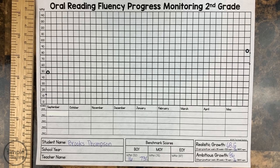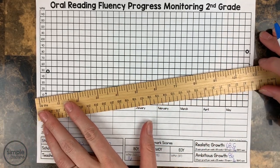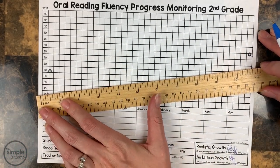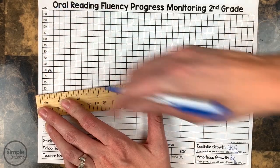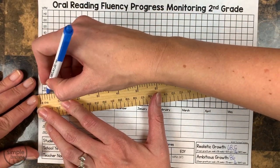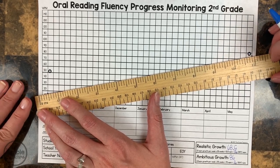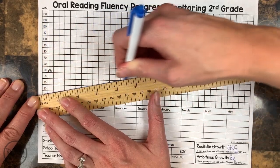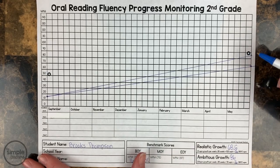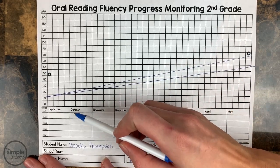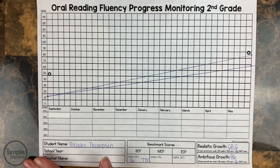Now we get our ruler out and draw some lines. I take the beginning-of-year point to the realistic endpoint and connect the dots. Then I do the same thing for ambitious, aiming right in the middle of both of those dots. And there we have it. When we're plotting her data, we want her data points to be within those lines.